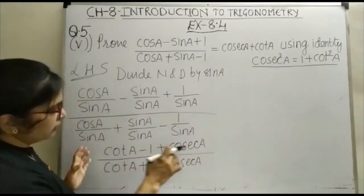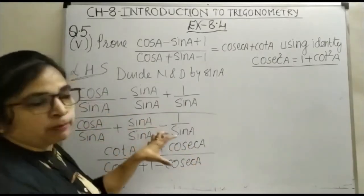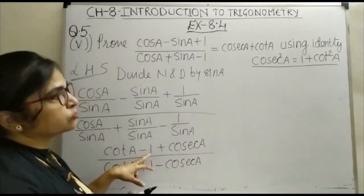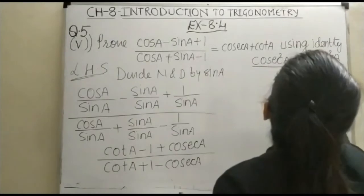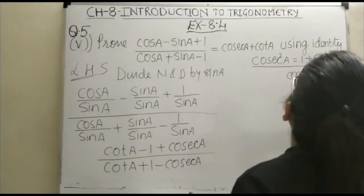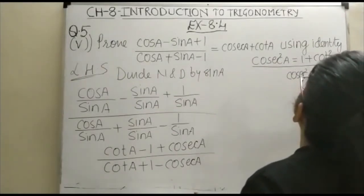Now, we will not disturb the denominator. In place of numerator, we will change this 1 by cosec square A, cosec square A minus cot square A is equal to 1.